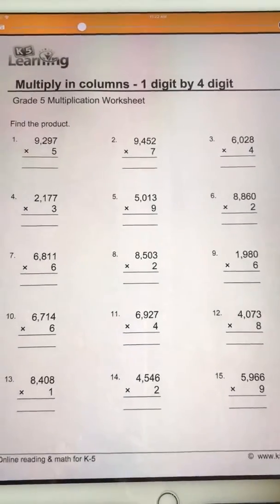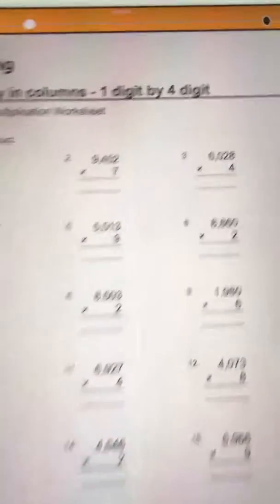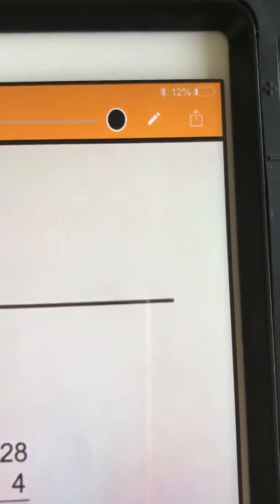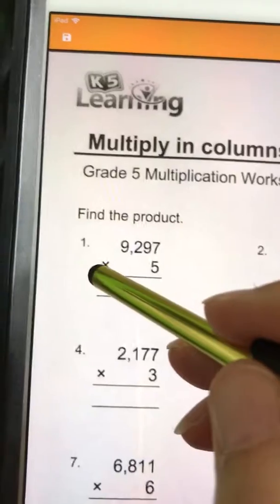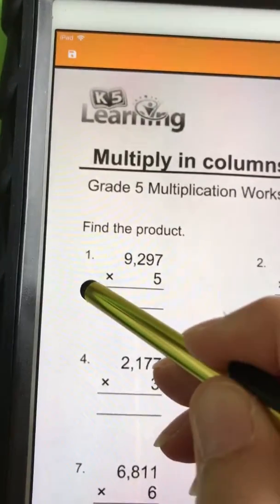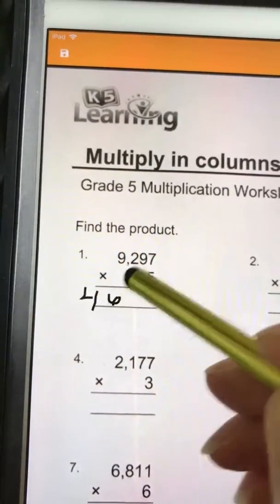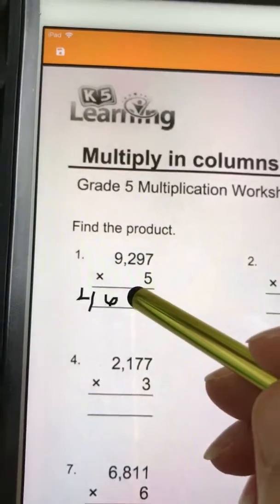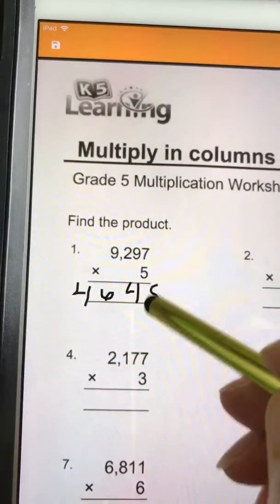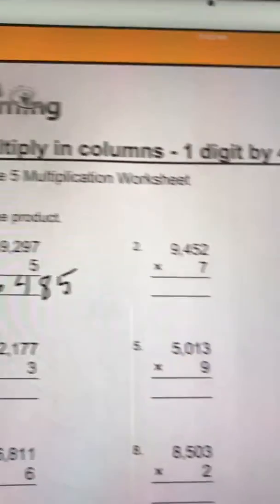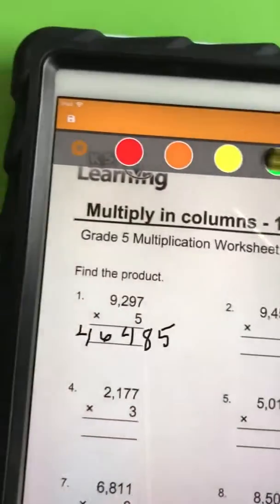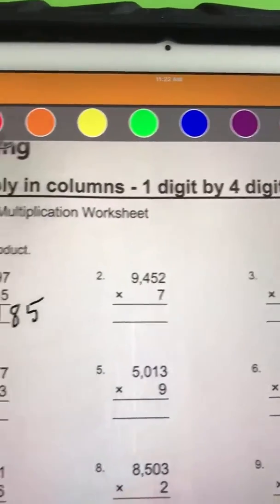There's two things that you can do to add print to this worksheet. You can either use your stylus and write on it. So we can do that right now. Here's my stylus, we can write right on top of the worksheet. It does also allow you to change the color if you'd like to choose another color for writing.